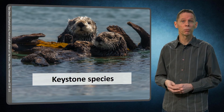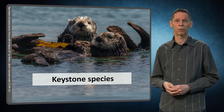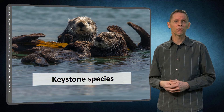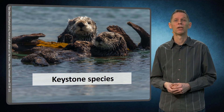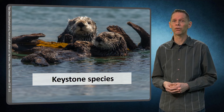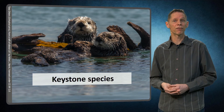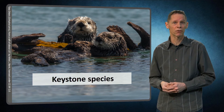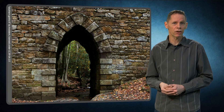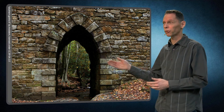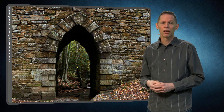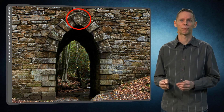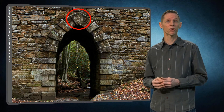Ecosystems are not only formed but also maintained by biota. Species that play a large role in the functioning of the ecosystem are called keystone species. Keystone species are crucial for ecosystem functioning, and their effect on the ecosystem is often larger than one would expect based upon their abundance. The term originates from architecture — in big arch constructions there is a single stone in the middle that holds together the entire arch. If this stone is removed, the arch collapses.